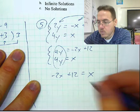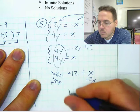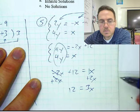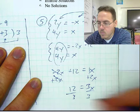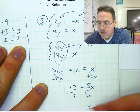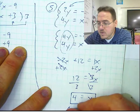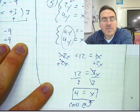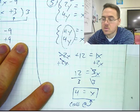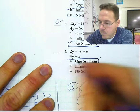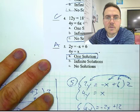We can add 2X to both sides — these eliminate. 12 equals 3X, because that X is really 1X, so X plus 2X is 3X. Divide both sides by 3 — these eliminate. 12 divided by 3 is 4, so X equals 4. That means these two lines are going to cross at X equals 4, which means they have one solution. The answer to number 5 is A.